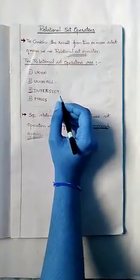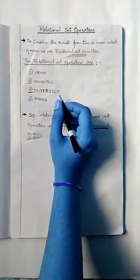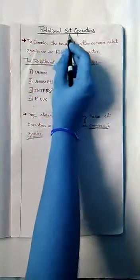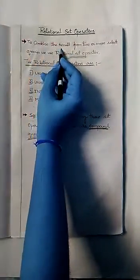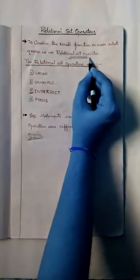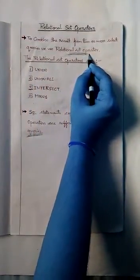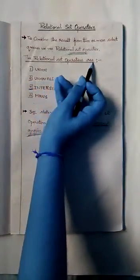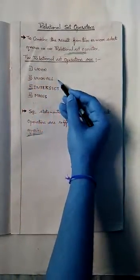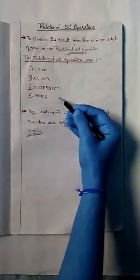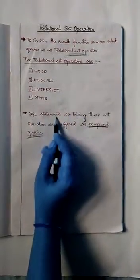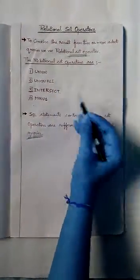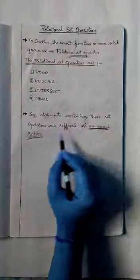Hello, I am Kaushalya. Now I am going to discuss about relation set operators in SQL. To combine the result from two or more queries, we use relation set operators. The relation set operators are union, union all, intersect, and minus. SQL statements containing these set operators are referred to as compound queries.